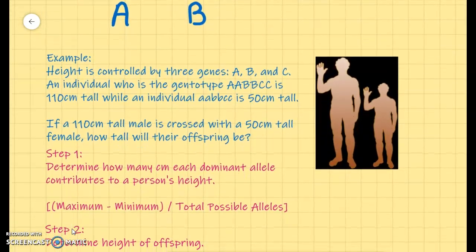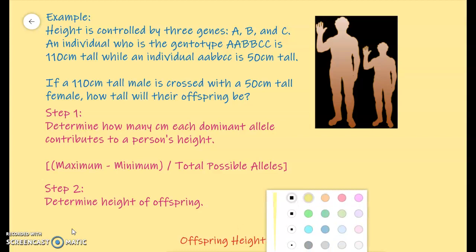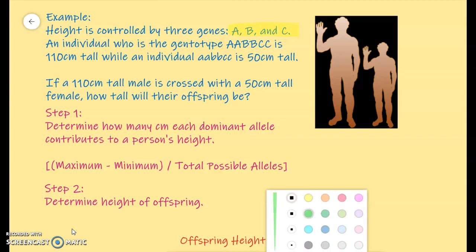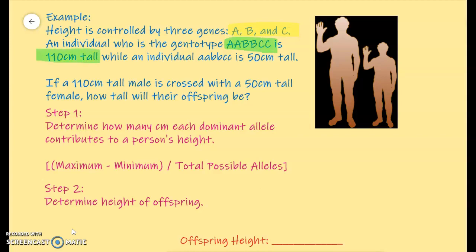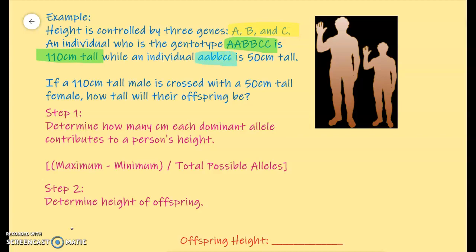Let's put this to work. Let's try to figure out a problem and see how this is going to work for your homework. In this problem, height is controlled by three genes: A, B, and C. An individual who is homozygous dominant for all three genes can be no taller than 110 centimeters — that's the extreme for the tallest you could be. While an individual who is homozygous recessive for all three genes, their extreme on the low end is 50 centimeters tall. So all the play in these individuals is going to be between 110 centimeters and 50 centimeters tall. The problem is asking: if a 110 centimeter tall male is crossed with a 50 centimeter tall female, how tall will their offspring be?